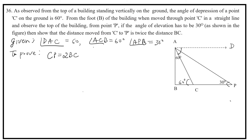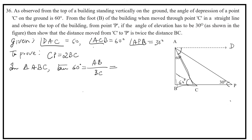Now we have two triangles. In triangle ABC, tan 60° equals opposite side AB divided by adjacent side BC. So tan 60° equals root 3, which gives AB divided by BC equals root 3. Therefore AB equals root 3 times BC. Let this be equation 1.